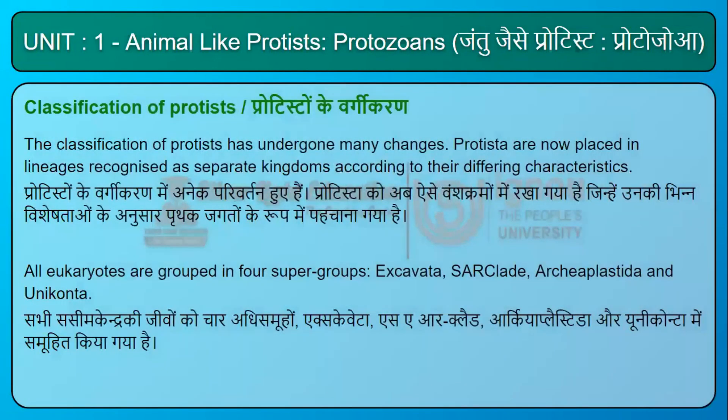Classification of protists: the classification of protists has undergone many changes. Protista are now placed in lineages recognized as separate kingdoms according to their differing characteristics. All eukaryotes are grouped in four supergroups: Excavata, Sarclate, Archaeoplastida, and Unikonta.